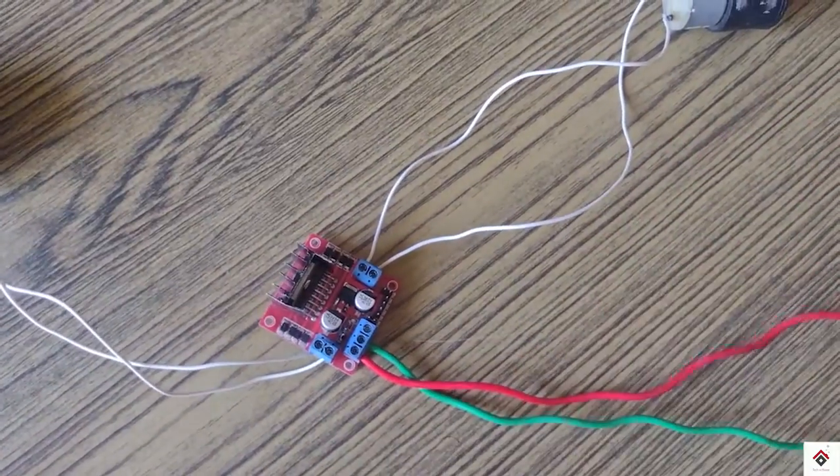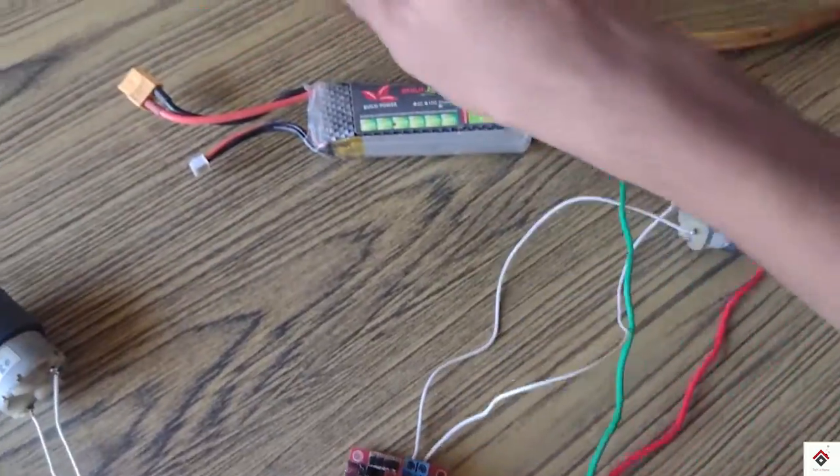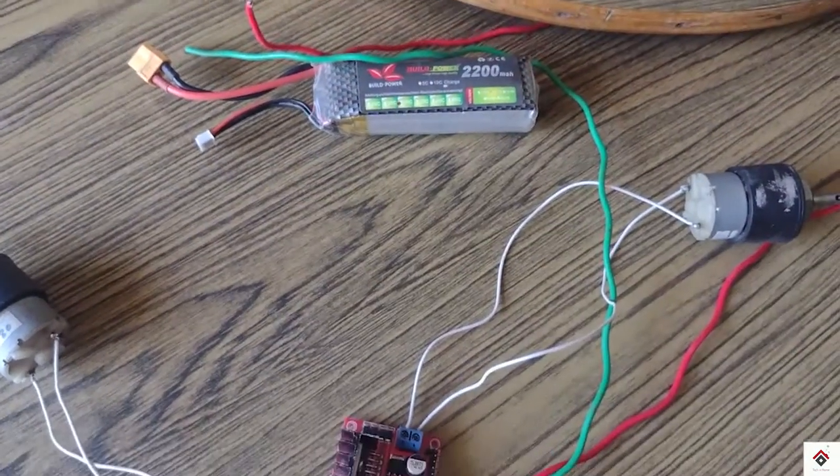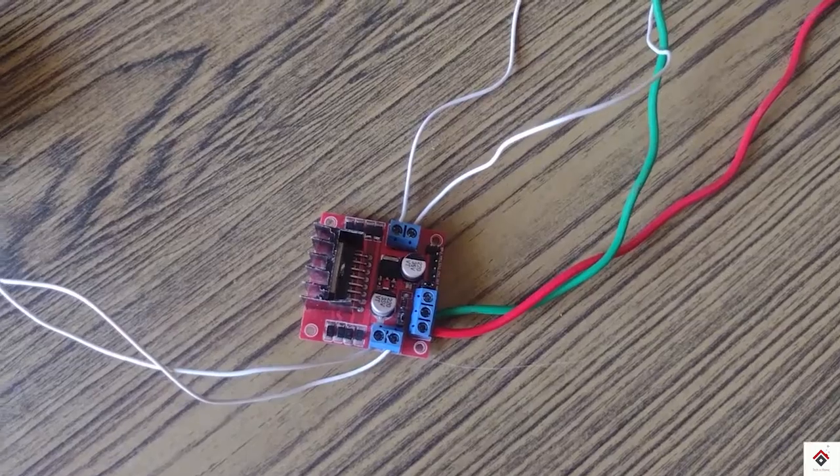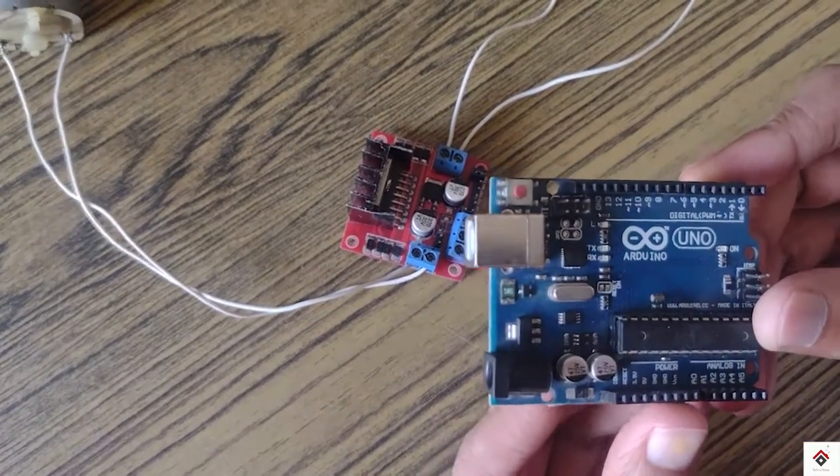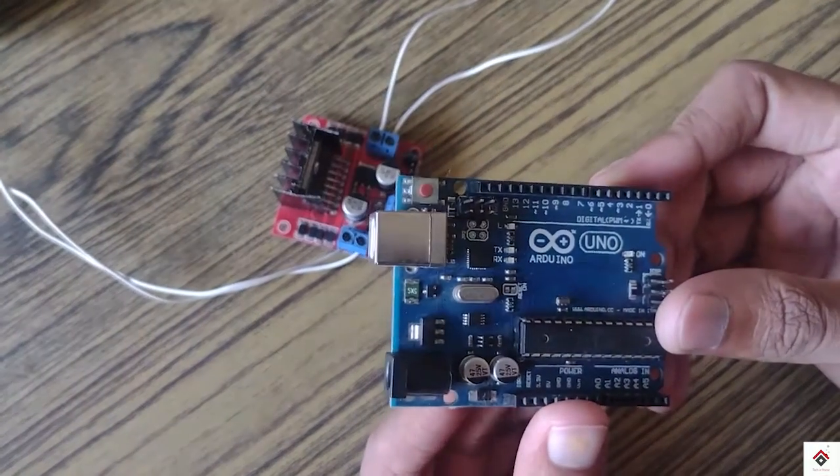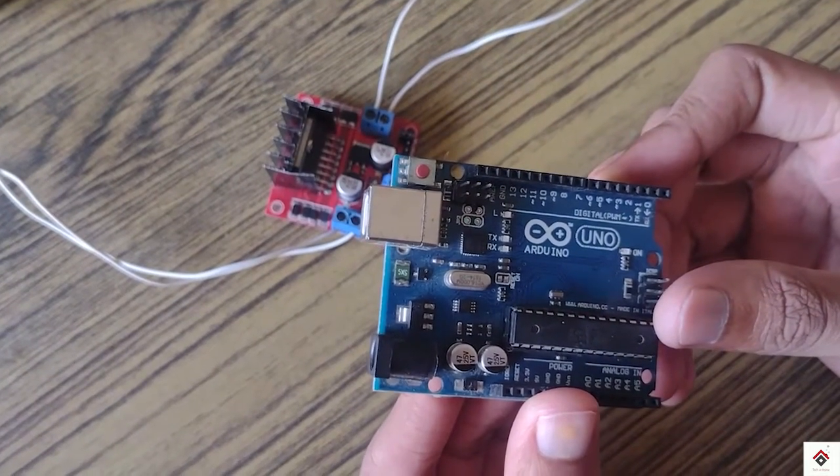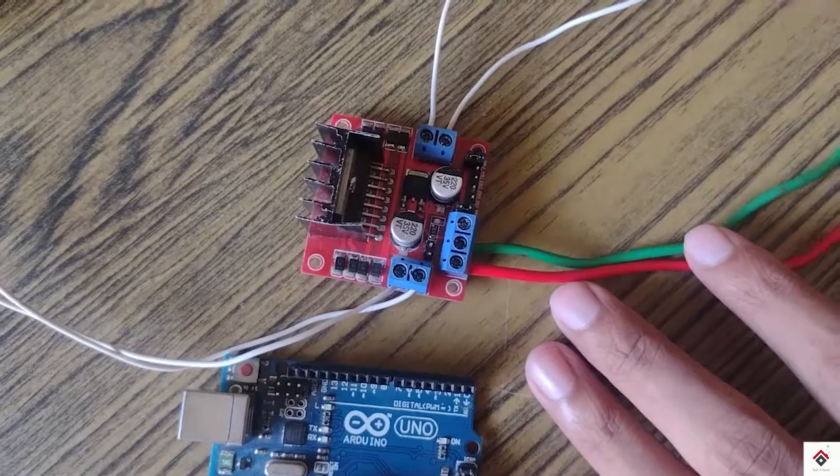At the end we will be connecting these two wires to the LiPo battery which is 11.1 volts. I'm using Arduino Uno board as a controller. To control two motors we need four digital pins.